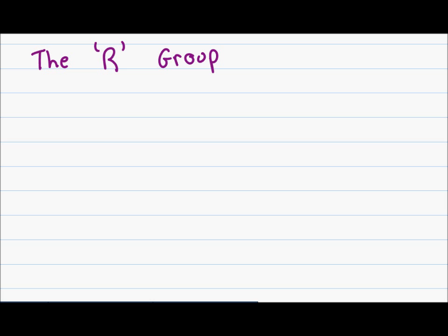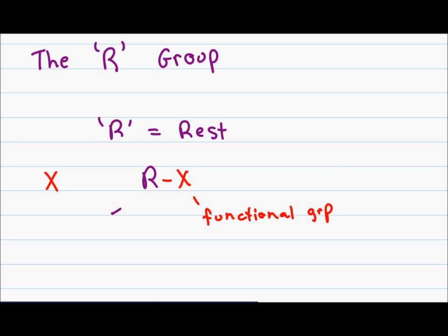Another important topic to consider is the R group. The R group is not actually a functional group, but rather it is a way to represent the rest of the molecule. If I want to look at functional group X that shows up on a short carbon chain or a long carbon chain, it doesn't matter — I will simply show it as RX, where X represents my functional group and R refers to the rest of the molecule. Throughout my videos, I will be referring to functional groups by showing them as RX, so we can focus directly on the functional group and not worry about the molecule it's attached to.